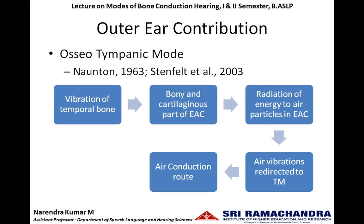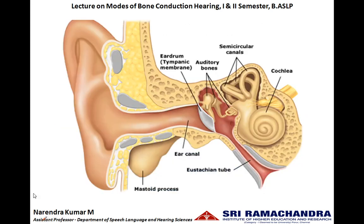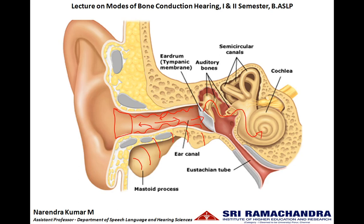Whenever the bone vibrates based on the mastoid process, the whole skull bone starts to vibrate and this vibratory energy radiates to the air particles lining the external auditory canal. These vibratory air particles can easily escape through an unoccluded ear canal. When the ear canal is occluded, the escape of vibratory energy is prevented and redirected towards the tympanic membrane, following the normal air conduction route to activate the inner ear, thereby enhancing bone conduction hearing. This apparent increase in bone conduction hearing when the ear canal is occluded is called the occlusion effect.